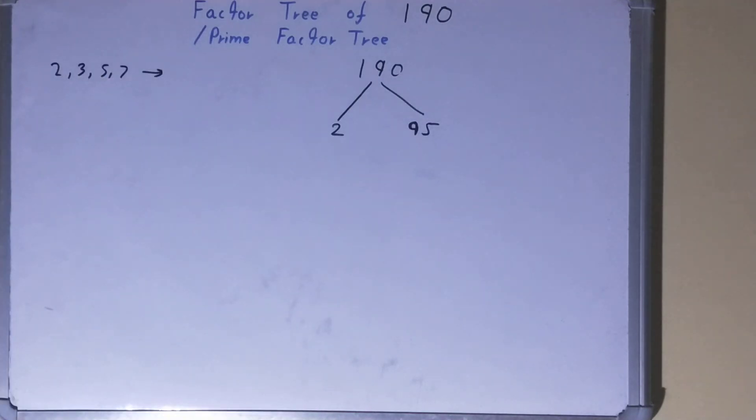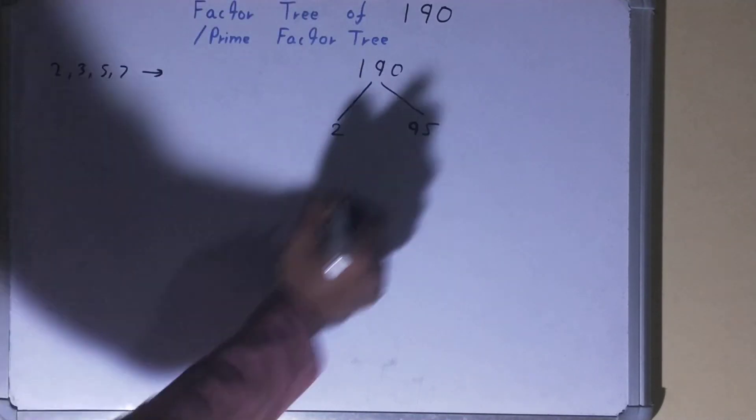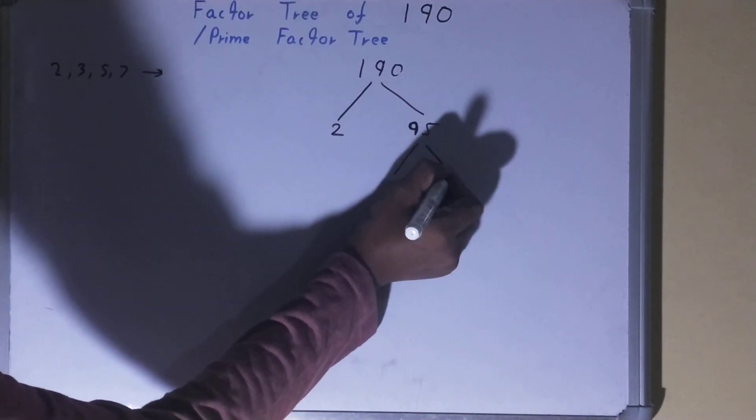95. Now do we need to factorize this 95 in the same way? The answer is again yes, because 95 is also a composite number just like the number 190. So we'll factorize it further on and we'll check it from here.